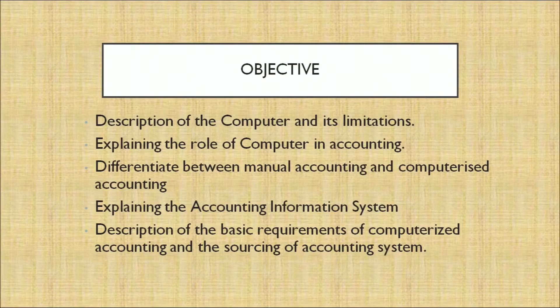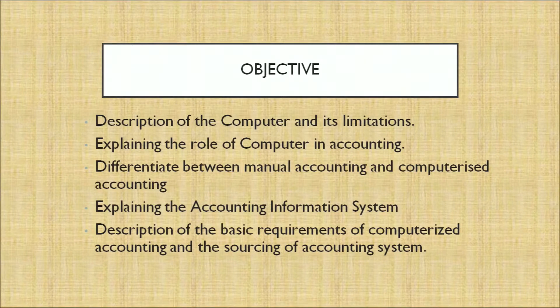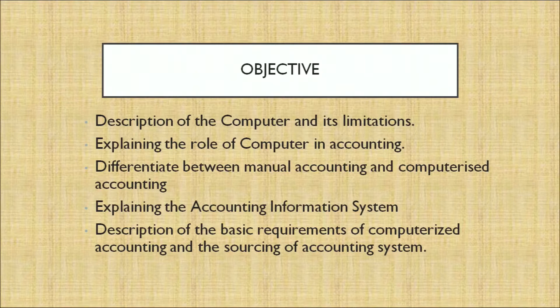Number one: description of the computer and its limitations. Second: explaining the role of the computer in accounting. Third: differentiating between manual accounting and computerized accounting. Fourth: explaining the accounting information system. Fifth: description of the basic requirements of computerized accounting and the sourcing of the accounting systems.